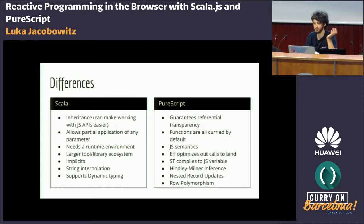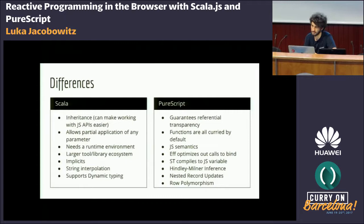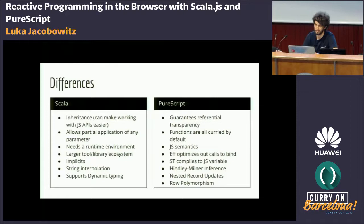In Scala you have implicits — that was discussed a lot this morning so I won't go further into that. You also have string interpolation, which is an easier way to do string concatenation and also supports dynamic typing. When working with JavaScript APIs, you can choose to provide strong types for the underlying JavaScript API or use dynamic typing. I would always go for strong types, but you have some flexibility there.